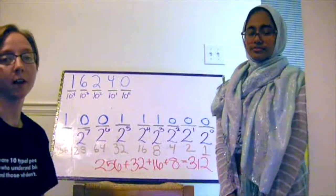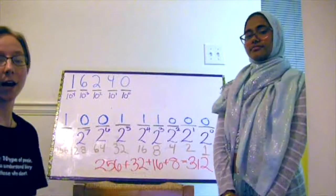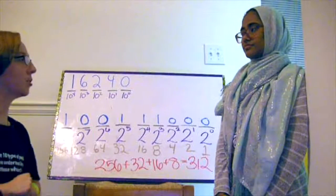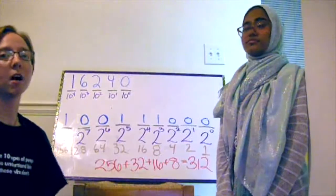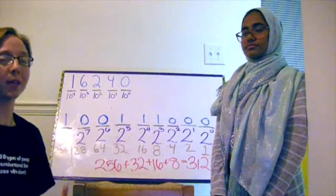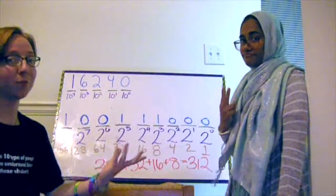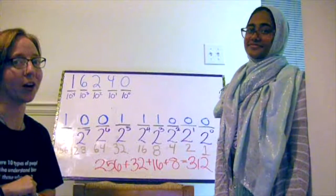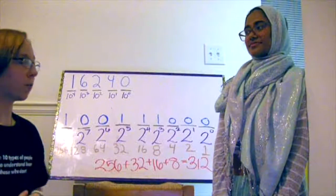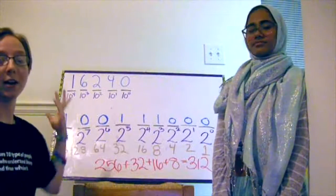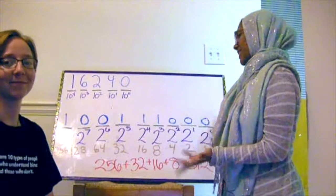Now, every number you can think of in decimal can be written in binary. And now you know how to convert from binary to decimal. The larger the number is in decimal, the longer the strings of 1s and 0s will be. I guarantee it — every single number can be written as powers of 2. If you want to learn more about that, you should take a course in number theory. But for now, you have the power to interpret any number, whether it is given to you in decimal or in binary. You're welcome. Now go second, and happy counting!